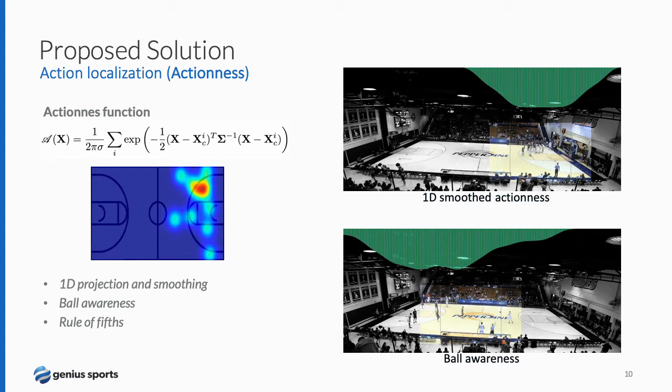To localize the main action of the game, we define an action function to model the distribution of players in the court. Our assumption is that the main action is more likely to happen where the density of players is higher. We define the action as a two-dimensional function that models players as 2D Gaussians in the court. We then project and smooth the action function along the horizontal axis and compute its maximum, which defines the center of the framing. To always include the ball, we use a rule of fifths and ensure the ball, if detected, is included inside the framing; if not, the action value is corrected to contain the ball.